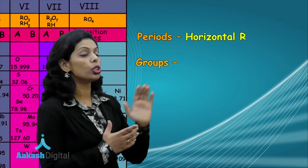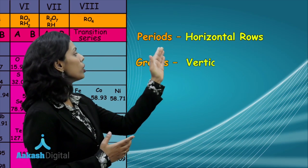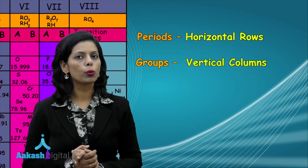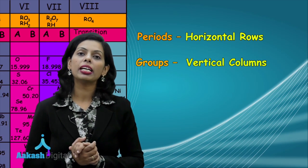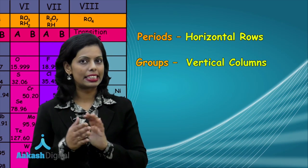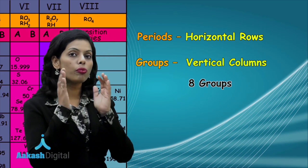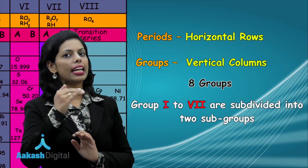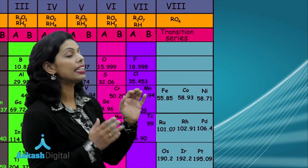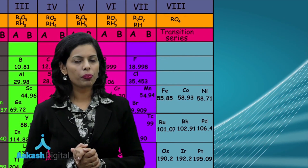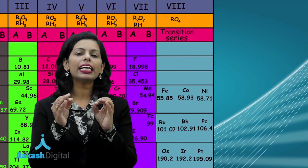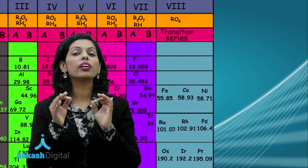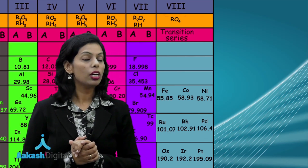The periods were the horizontal rows and the groups were the vertical columns. The total number of groups present in Mendeleev's periodic table were 8, in which groups first to seventh have the subgroups A and B, while group 8 does not have any subgroup. It basically consists of three rows, representing the transition elements.